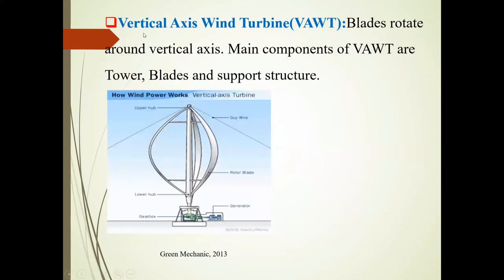The next term is vertical axis wind turbine, or VAWT. In this case, blades rotate around a vertical axis. The main components of VAWT are tower, blade, and support structure.